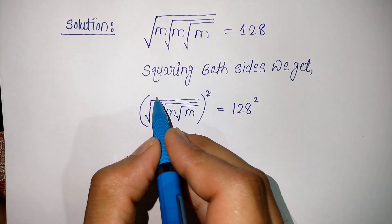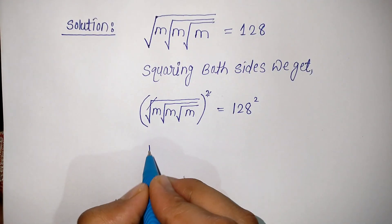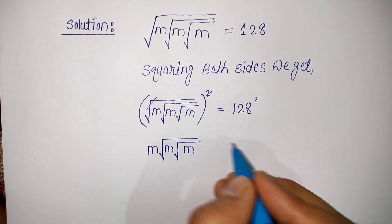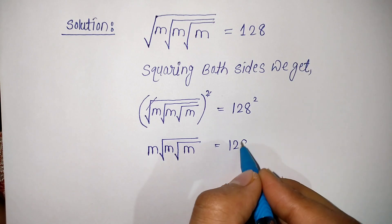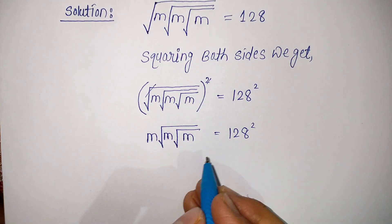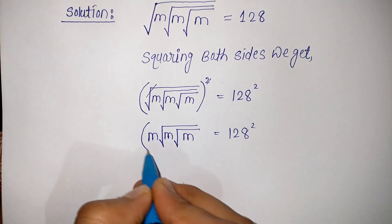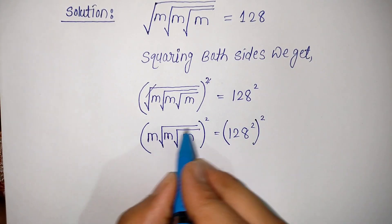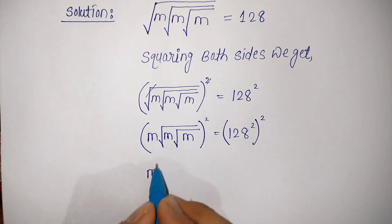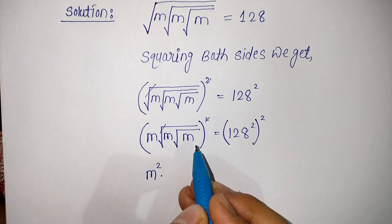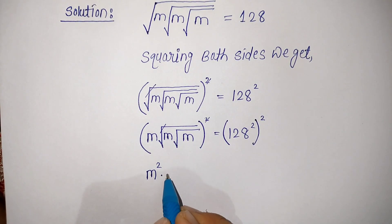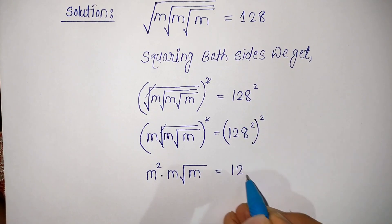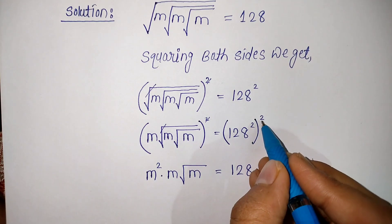The square and square root get cancelled, so M into under root of M into under root of M is equal to 128 squared. Again squaring both sides, we get M squared into under root of M — the square root and square get cancelled — meaning M into under root of M is equal to 128 to the power 4, since 2 into 2 is 4.